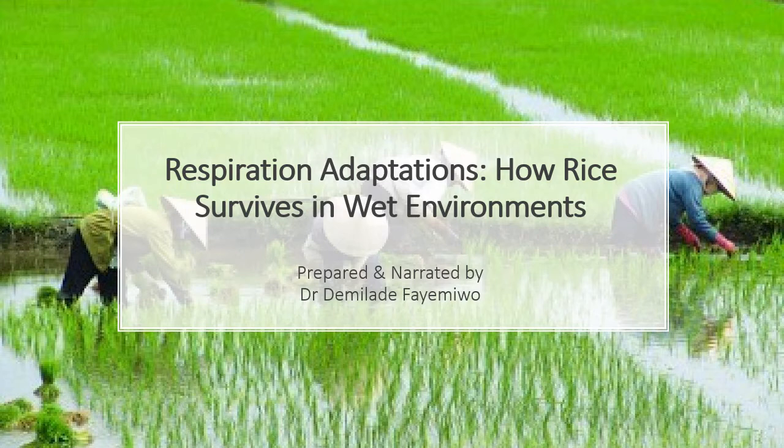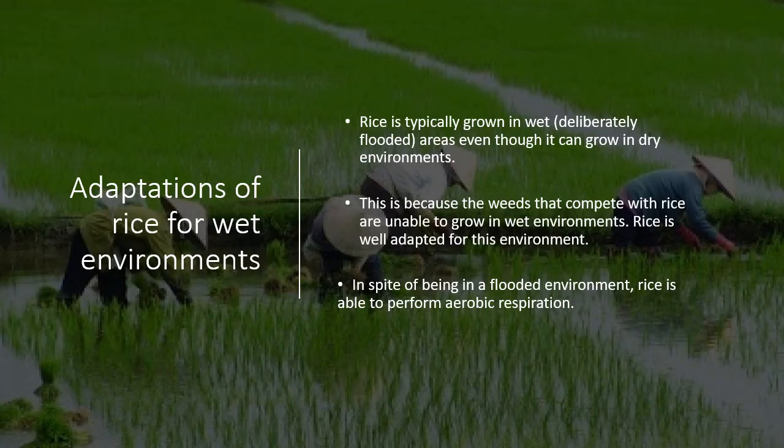Today, I want to conclude by telling you about respiration adaptations, and the focus is usually on rice and how rice survives in a wet environment. Typically, when we grow rice, we grow it in very flooded environments. Rice actually can grow in dry environments, but people choose to grow it in swampy environments simply to reduce competition with weeds, as weeds are not able to grow in the same wet environment as rice.